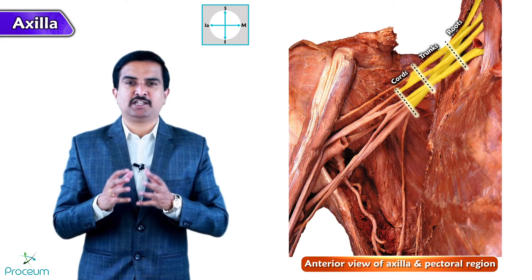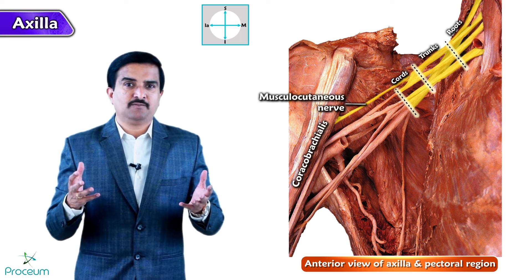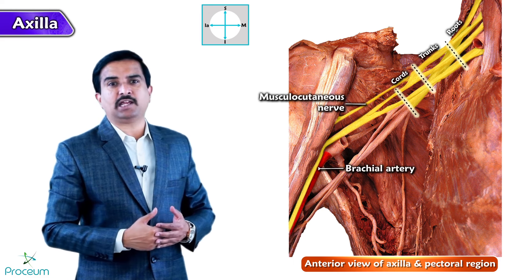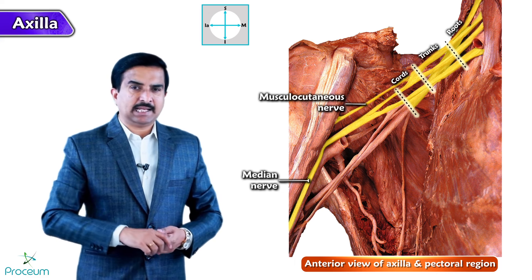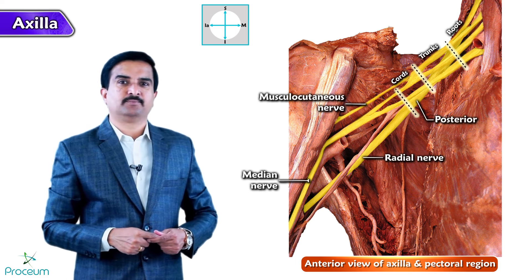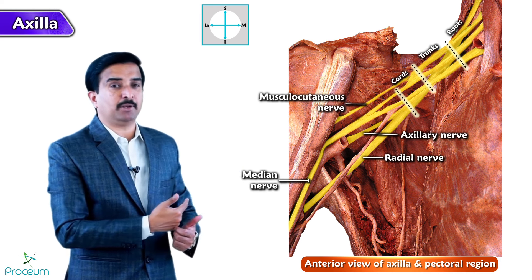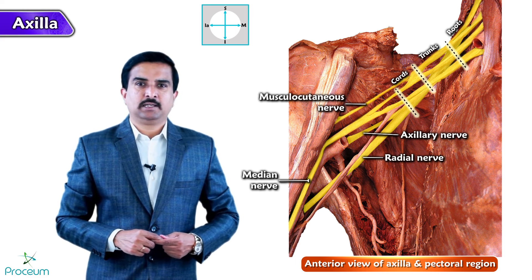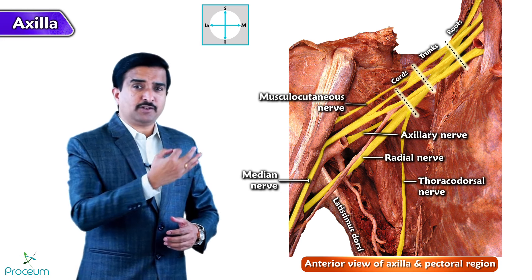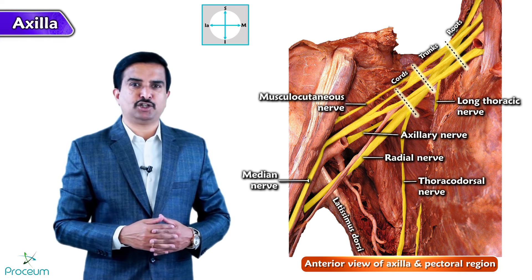Some prominent branches of these cords are also observed. The musculocutaneous nerve can be identified as it pierces the coracobrachialis muscle. The nerve along with the brachial artery seen here is the median nerve. The thick branch appearing as the continuation of the posterior cord is the radial nerve — the posterior cord gives rise to the radial and axillary nerves, and the radial nerve runs posteriorly into the posterior compartment of the arm. The latissimus dorsi and thoracodorsal nerve are also observed, and the long thoracic nerve, medial to the thoracodorsal, is partially seen supplying the serratus anterior muscle.